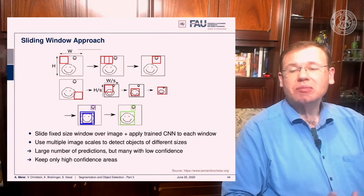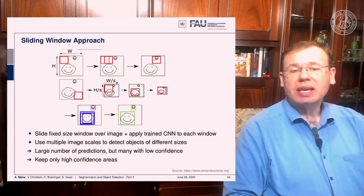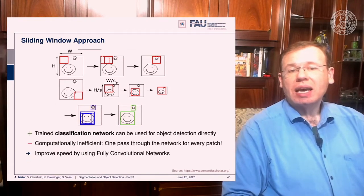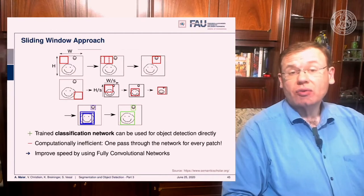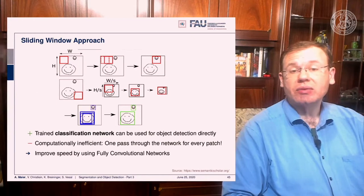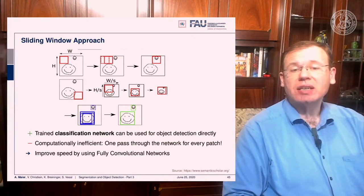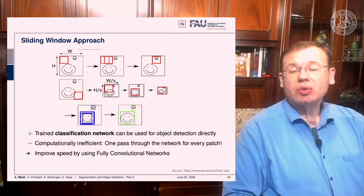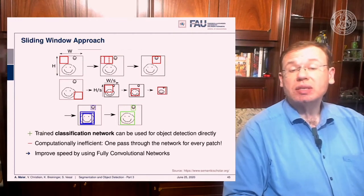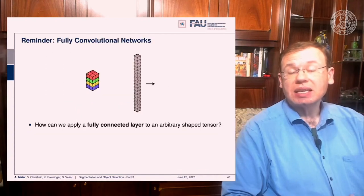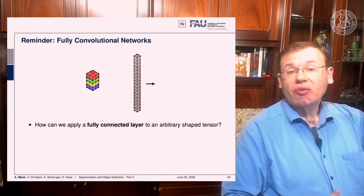This is probably not the way we want to go. One advantage is that we can reuse a trained classification network without retraining, but it is computationally very inefficient. One idea to improve efficiency is to use fully convolutional neural networks.